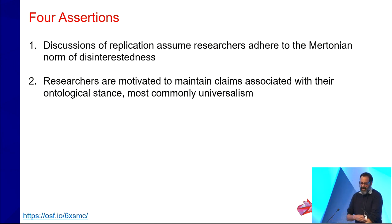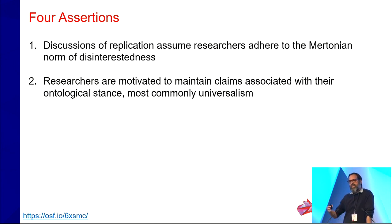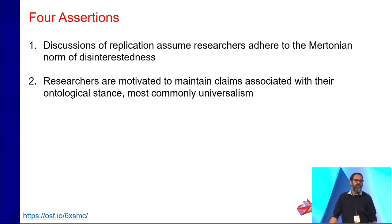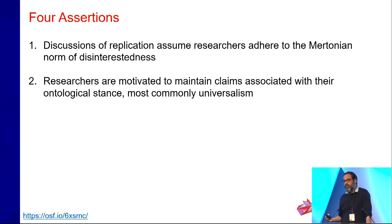Second, researchers are highly motivated to maintain claims associated with universalism. This is particularly true in social sciences, where we want to make universal claims — often based on meager evidence — about all of humanity. Going back to Robert Guthrie's classic book in the 1970s, 'Even the Rat Was White,' there has been a parade of scholarly articles decrying the lack of sample diversity in our research. And yet nothing has really changed. Mainstream researchers are perfectly content to make universal claims based on meager evidence.